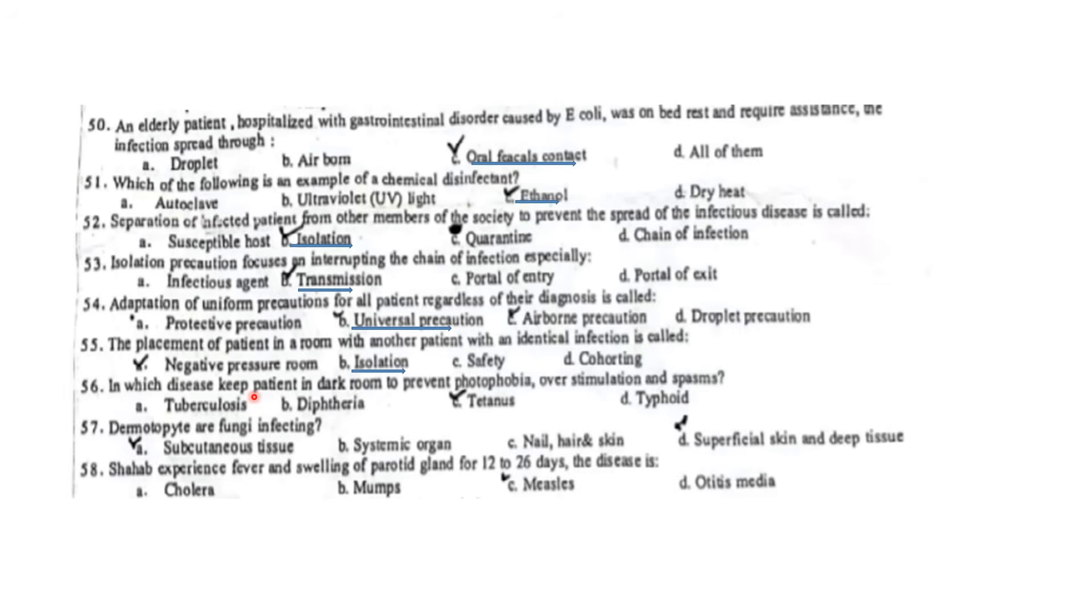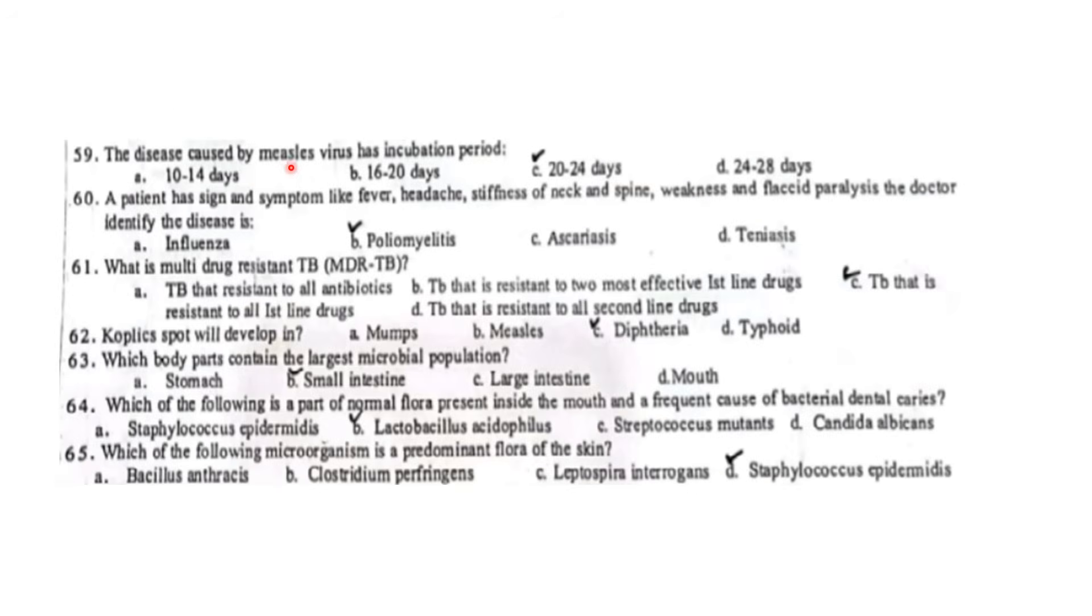In which disease do you keep a patient in a dark room to prevent photophobia and stimulation and spasm? Tetanus. Treatment for photophobia is also related. Dermatophytes are fungi infecting the skin, nails, and hair. A patient experiences fever and swelling of parotid gland for 12-26 days. The disease is mumps. Parotid gland swelling indicates mumps. The disease caused by measles virus has an incubation period of 10 to 14 days. The patient has symptoms like fever, headache, stiffness of neck and spine, weakness, and flaccid paralysis. The doctor identified the disease as poliomyelitis. Multi-drug resistance means the organism resists two most effective first-line drugs. Koplik spots are developed in measles.